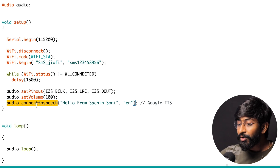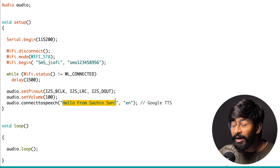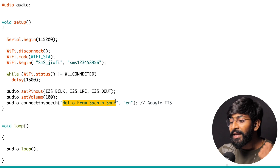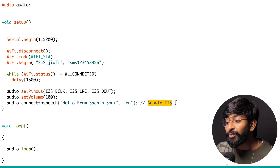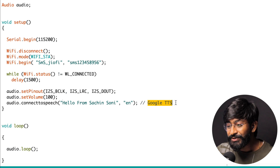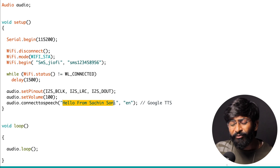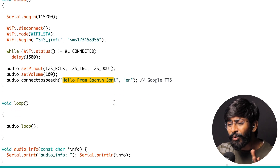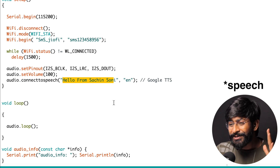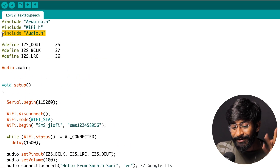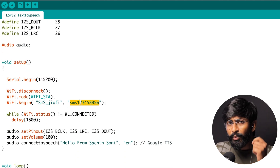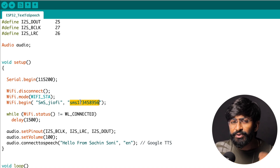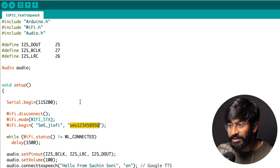Here we provide the text string and specify which language it's in. It uses Google text-to-speech conversion, calling all those APIs in the background so we can hear the string in audio format. This converts any text into speech thanks to the audio.h library. Make sure you provide the Wi-Fi credentials inside the WiFi.begin function. I'll also provide this basic example code in the description so you can use it in other projects.